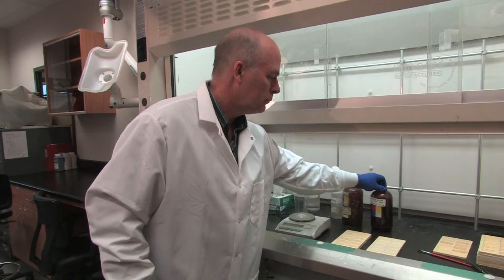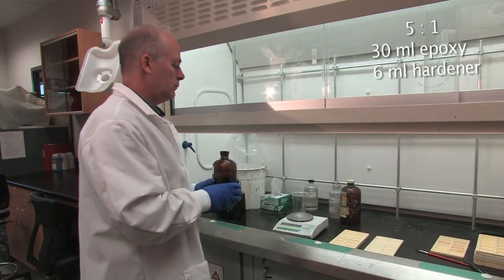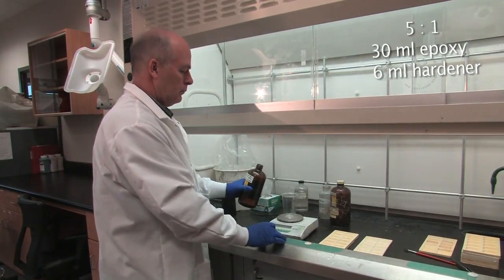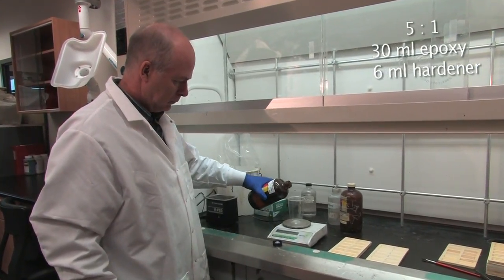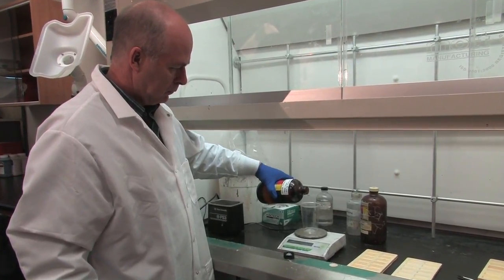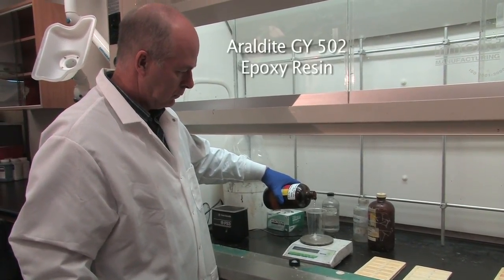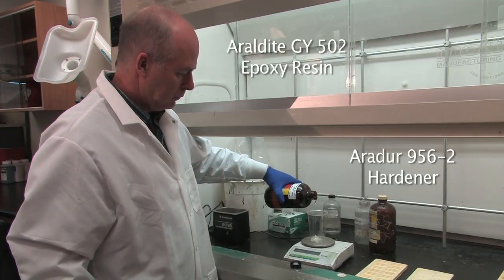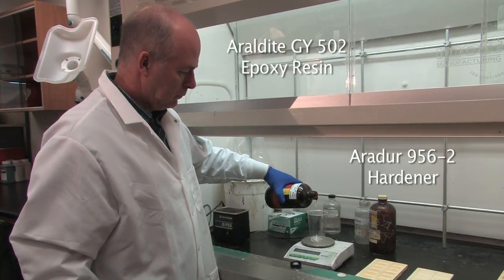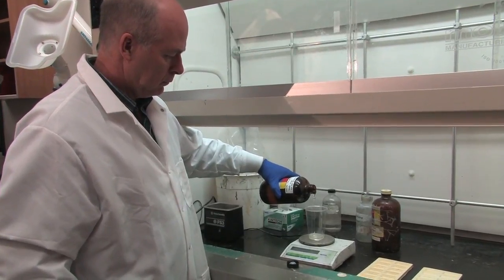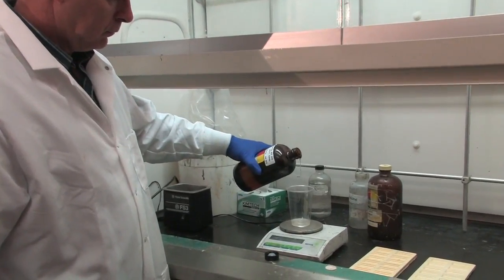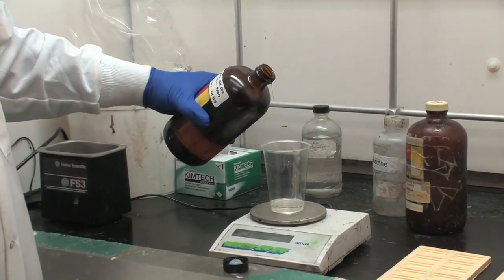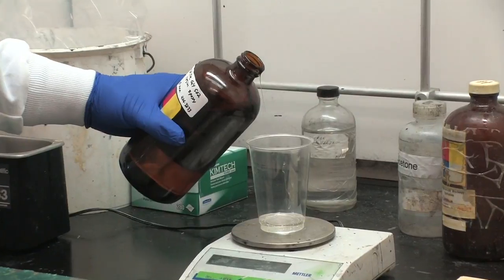The epoxy and hardener are mixed in a five to one mixture. Usually thirty milliliters of epoxy will be mixed to six milliliters of hardener and will fill a tray. For this embedding process we use a combination of Araldite GY502 epoxy resin and Aradur 956-2 hardener as it results in a clear hard mold. Any hard epoxy can be used but we use this particular one in our embedding. Be aware that the mixing ratio will change depending on the type of epoxy being used.